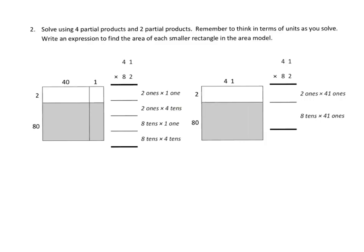The first problem we're going to look at is problem number two. We are going to solve using four partial products and two partial products. In other words, we're going to do this one way with four partial products and again with two. Remember to think in terms of units as you solve. Write an expression to find the area of each smaller rectangle in the area model. Yesterday when we worked on lesson number 36, we did four partial products. Let's take a look at that first.